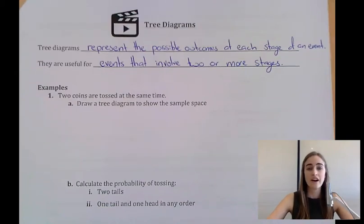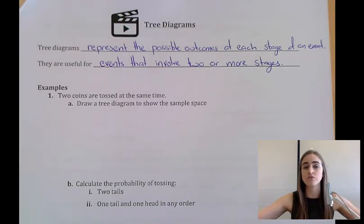In this video, I want to have a look at tree diagrams. We've looked earlier at lists and tables to represent all the possible outcomes of multi-stage events. But once we get above a two-stage event, lists and tables can get pretty messy. So instead we can use tree diagrams, and they represent every possible outcome at each individual stage.